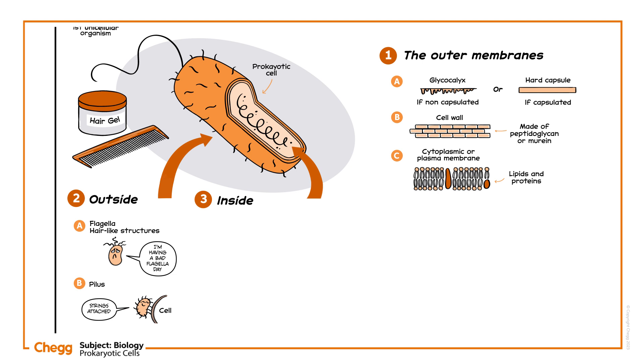Now, peering inside the membrane, we see other structures. Jelly-like cytoplasm fills the cell. It's mainly composed of water, but also contains enzymes, nutrients, ions, waste gases and several low molecular weight compounds.